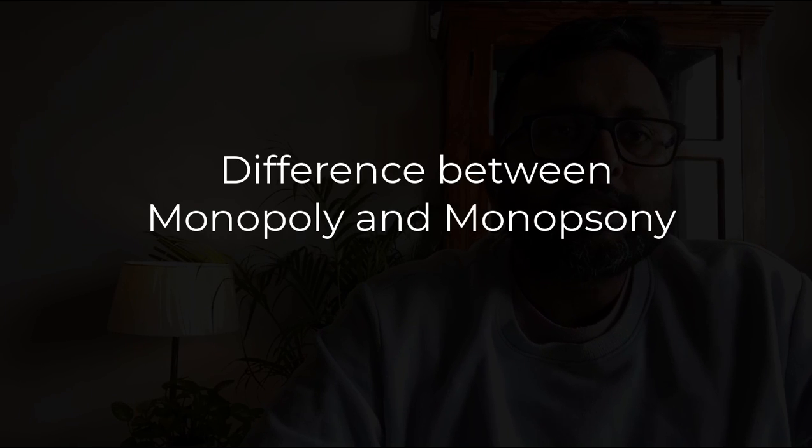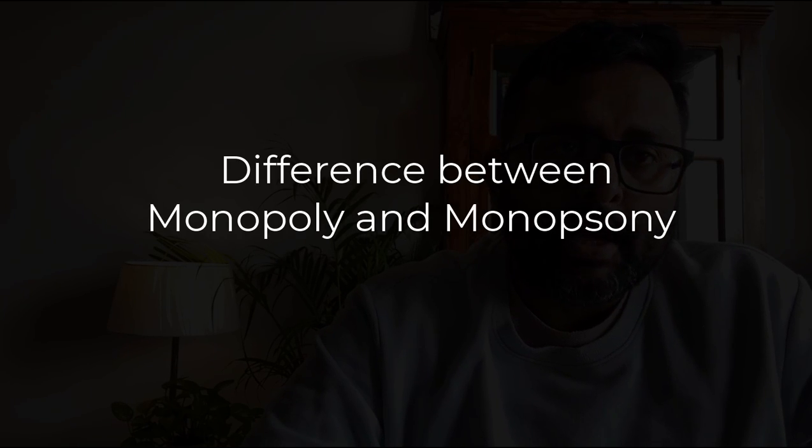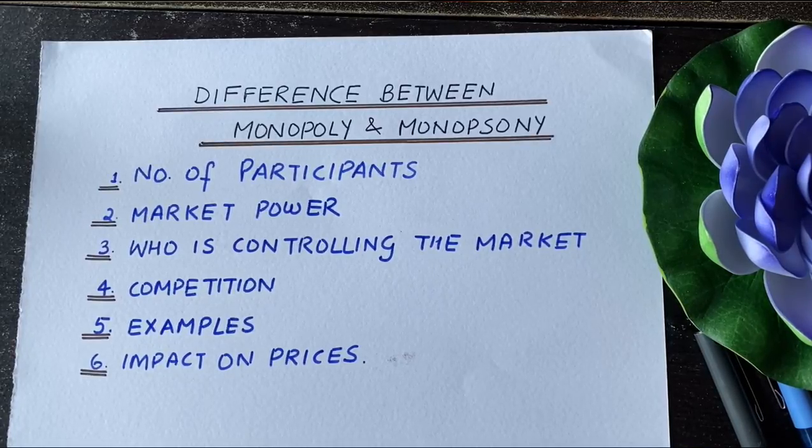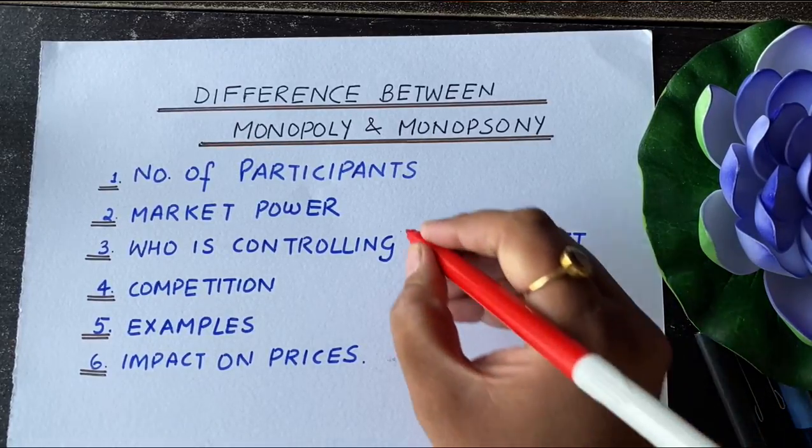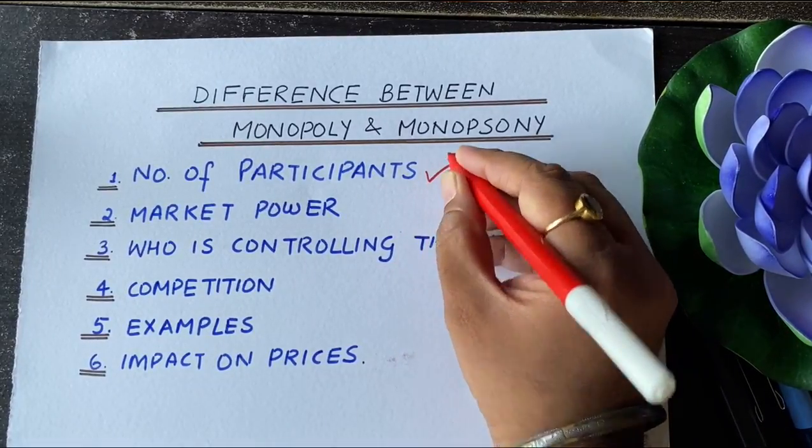There are a few differences between monopoly and monopsony. One difference is in terms of number of participants. In case of monopoly, there is only one seller but there are many buyers. In case of monopsony, there is one buyer but there are many sellers.